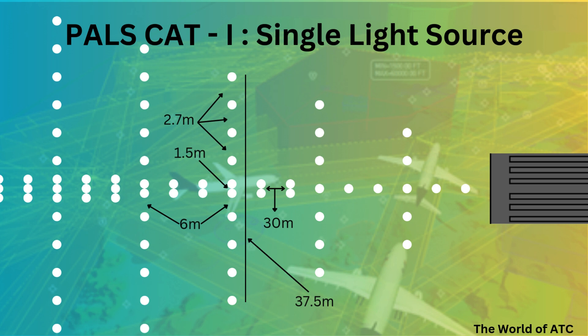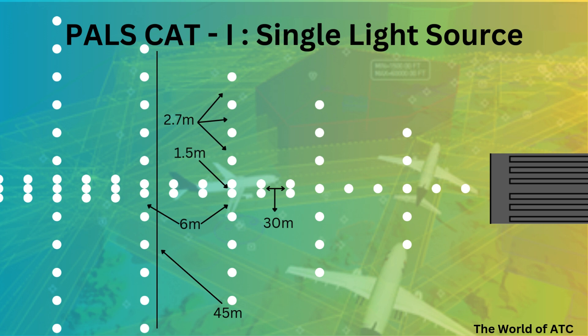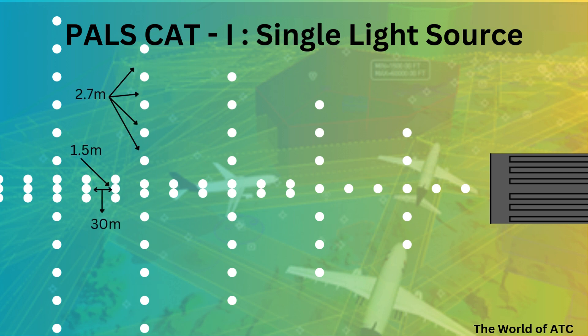Next, the centerline lights will be equidistant — that is, 30 meters from each other longitudinally — and the fourth crossbar is 45 meters in length. The distance between the crossbar lights would remain the same, that is 2.7 meters, and the distance between the crossbar lights and the centerline lights will again not be more than 6 meters in any case.